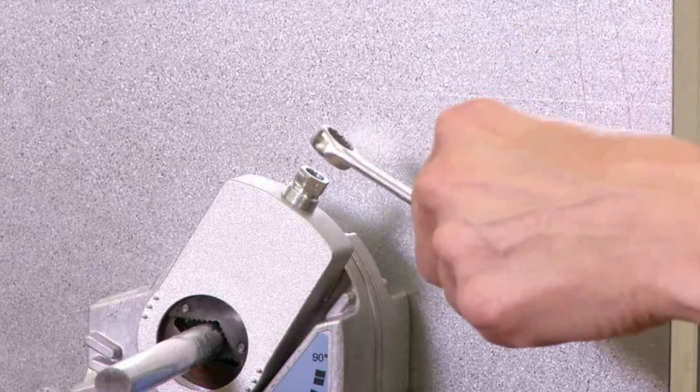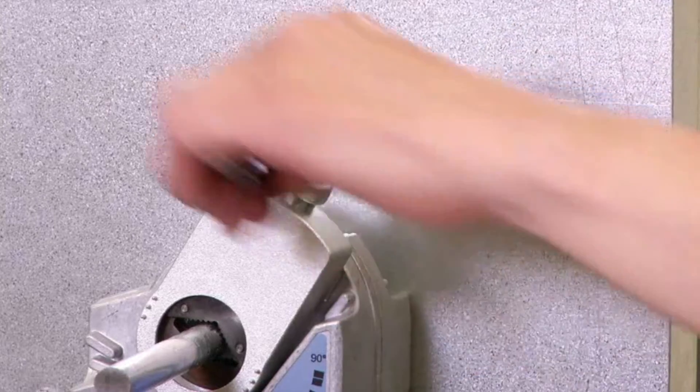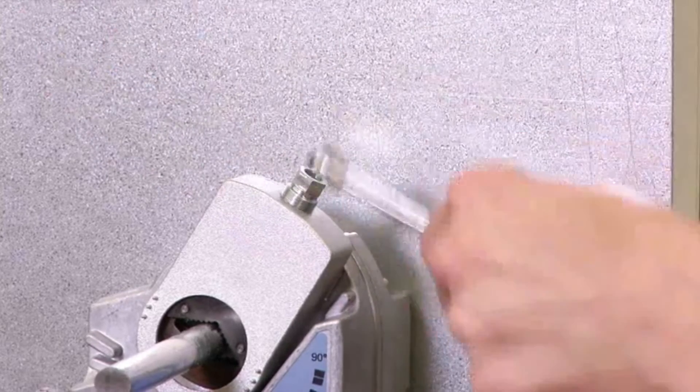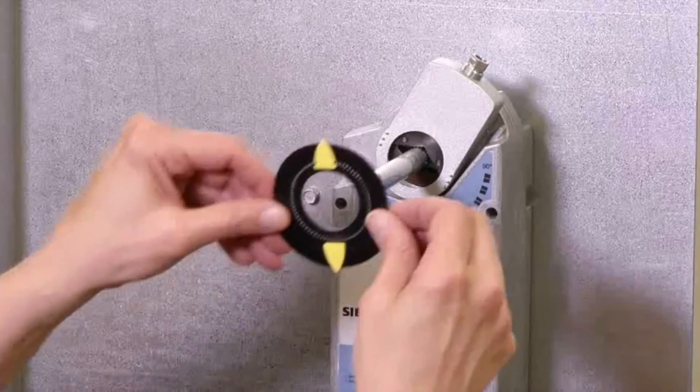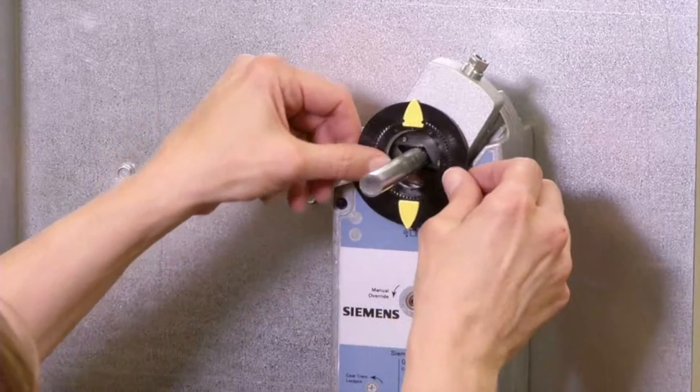Tighten the damper actuator to the shaft with the wrench to 7.5 foot-pounds torque maximum. Attach the position indicator and your installation is complete.